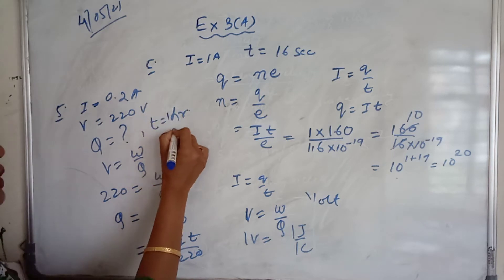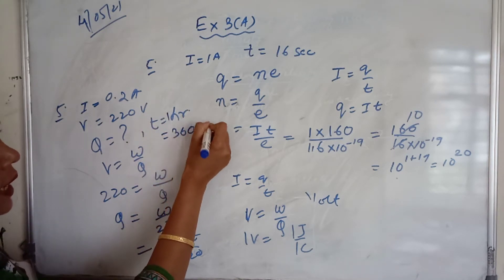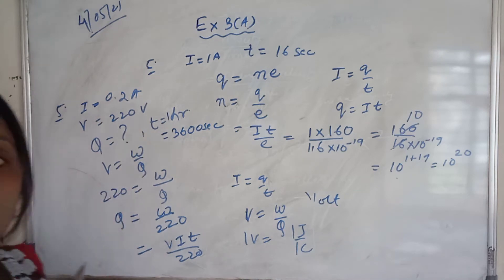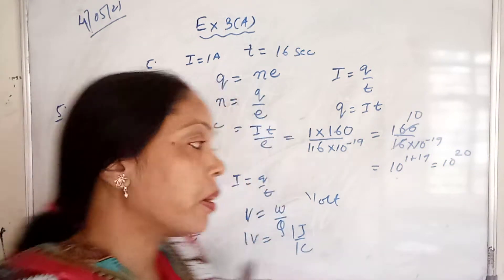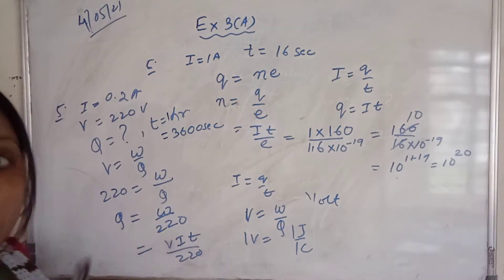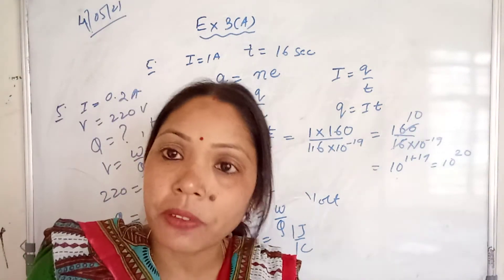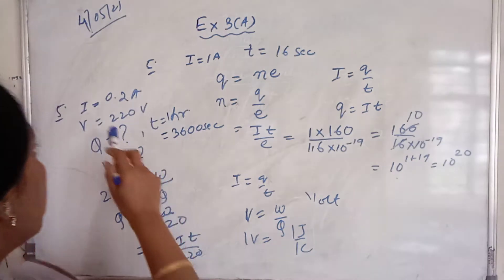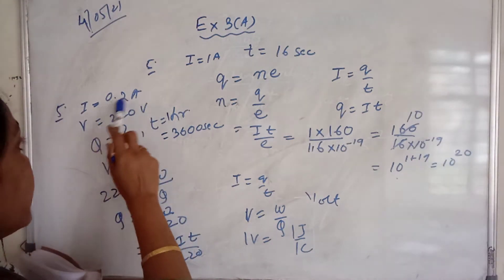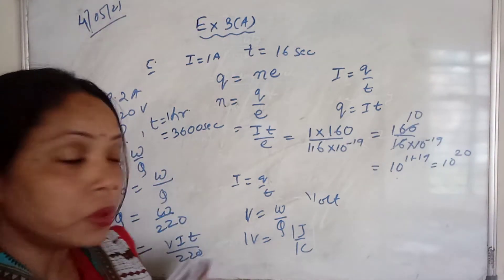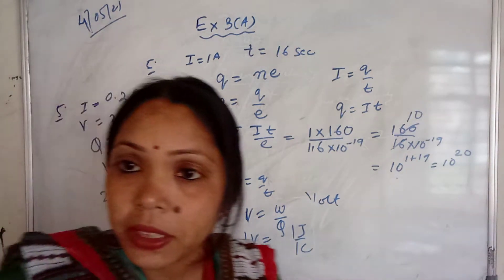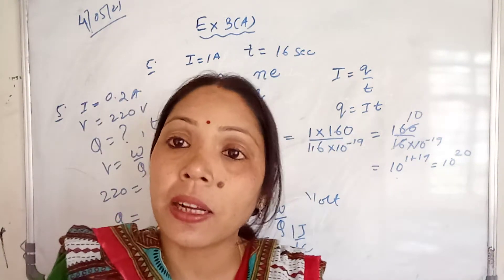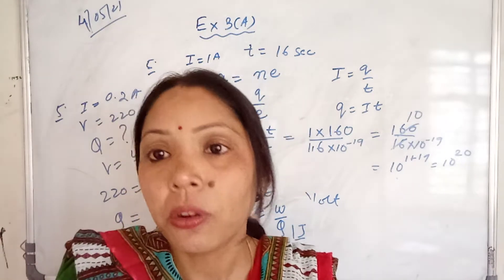One hour means 3600 seconds. Now we have a formula V equals W by Q, and in place of W we can use the formula VIT. So if you put the value V equals 220, then I equals 0.2 and T equals 3600 divided by 220, then your answer will come as 720 coulomb.